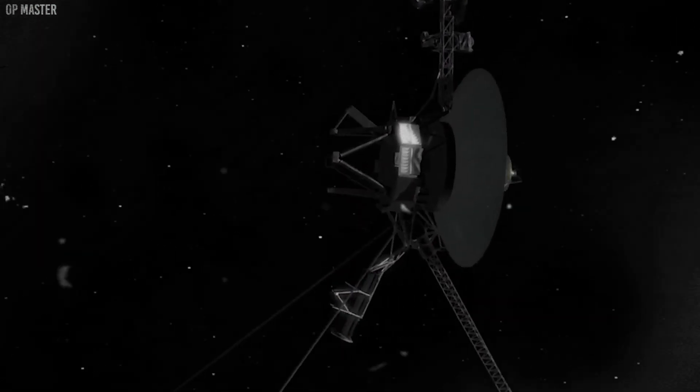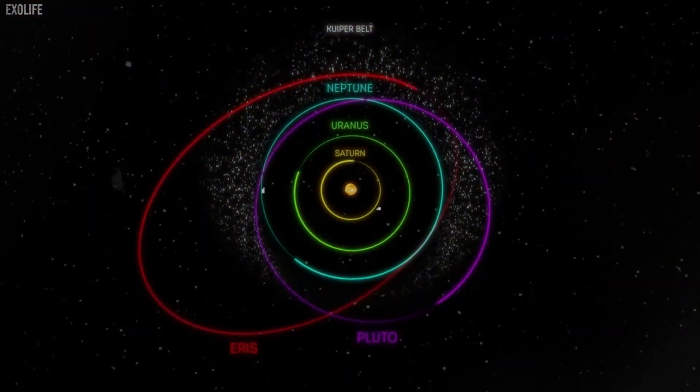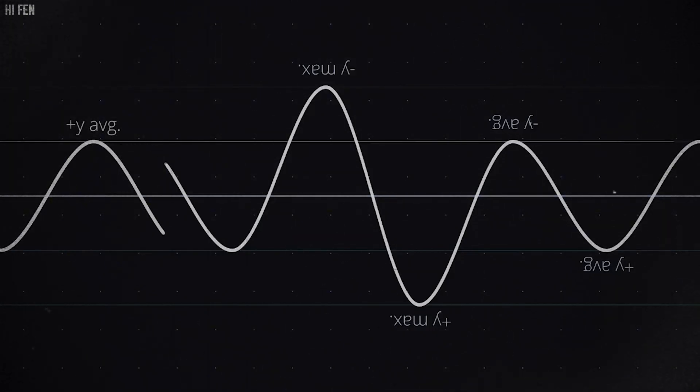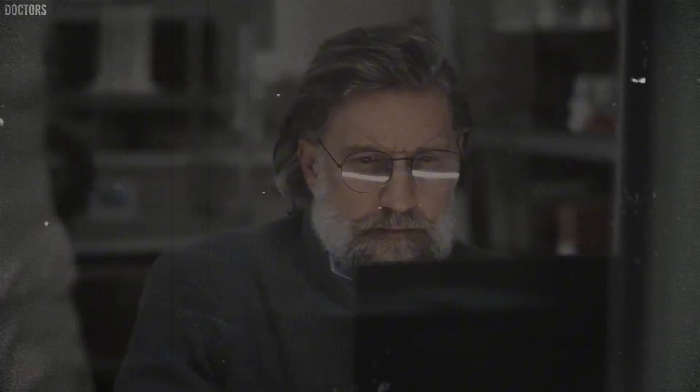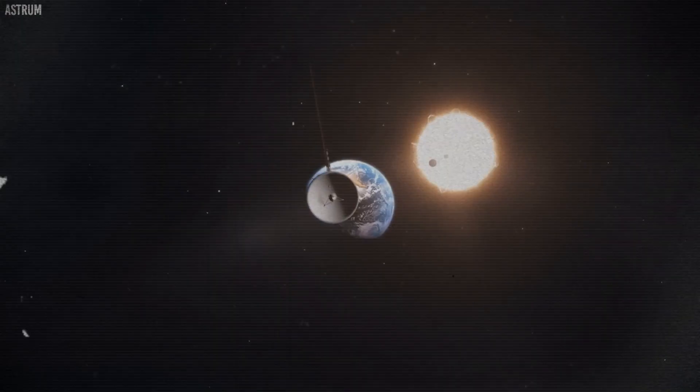It then headed towards Saturn. There it observed Saturn's rings from a close distance and discovered shepherd moons that help shape and maintain the rings. It also found that Saturn's moon Titan has a thick atmosphere composed of about 90% nitrogen.